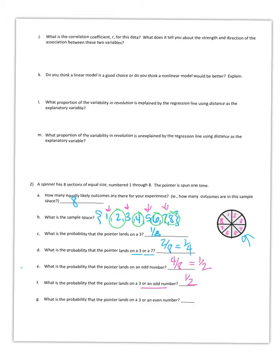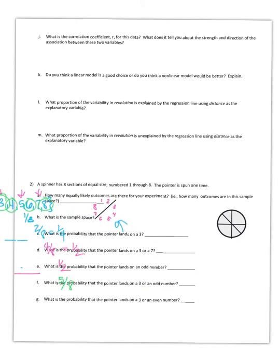What's the probability the pointer lands on a 3 or an even number? That makes our set 5 eighths, because there are five choices.